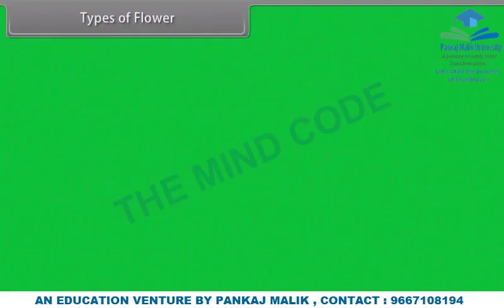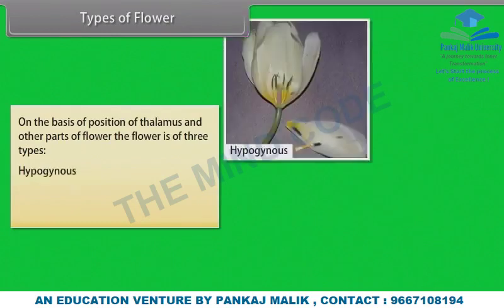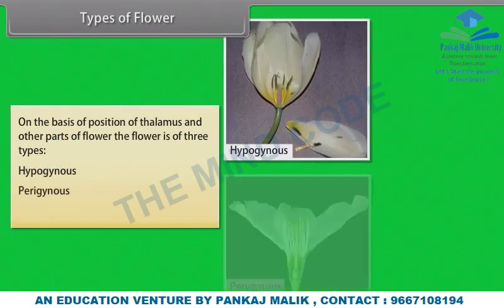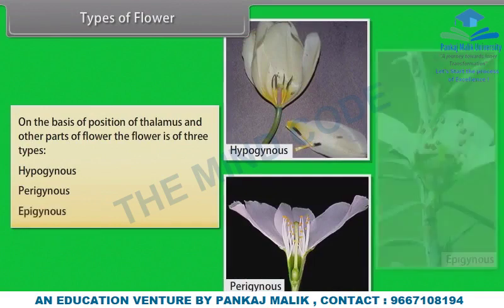On the basis of position of thalamus and other parts of flower, the flower is of three types: Hypogynous, Perigynous, and Epigynous.